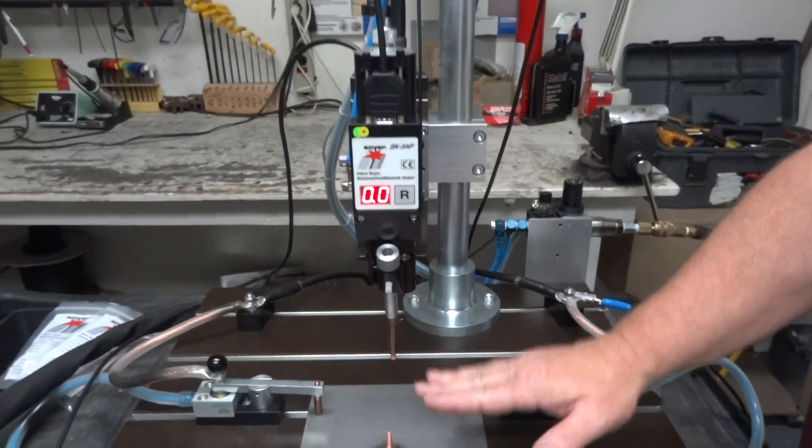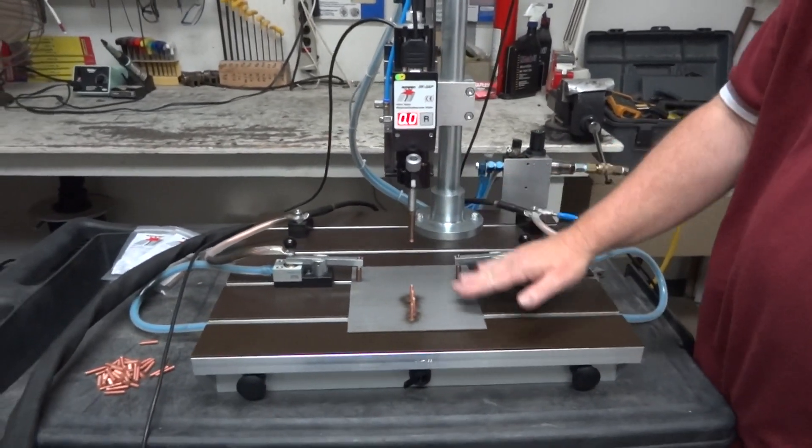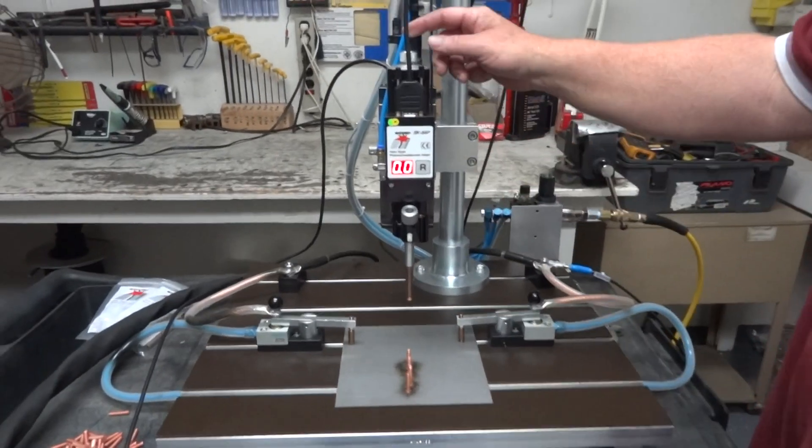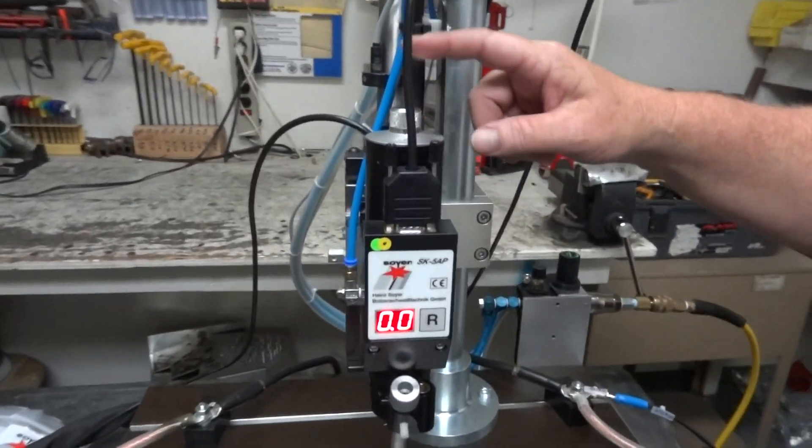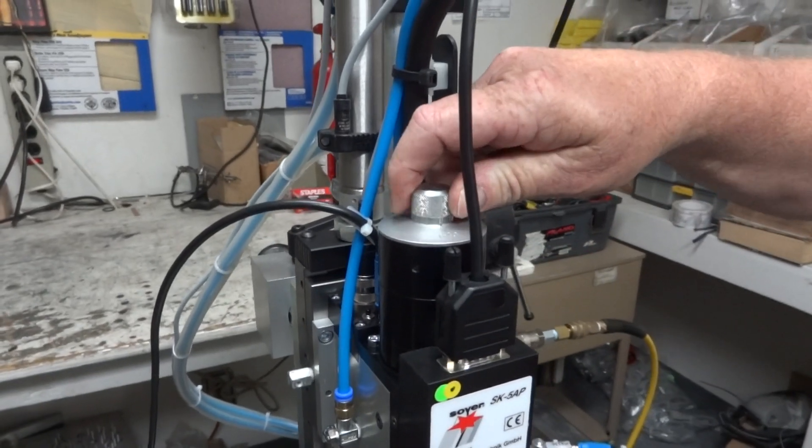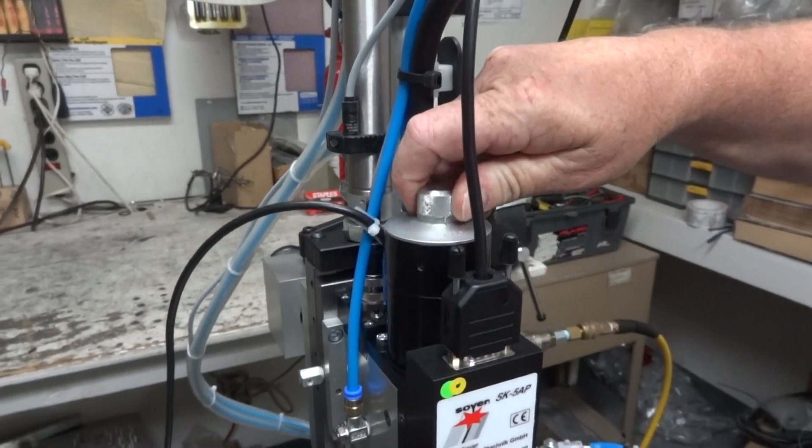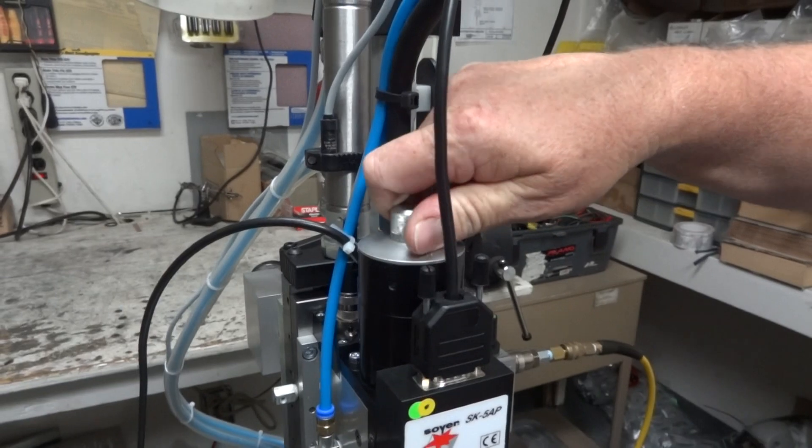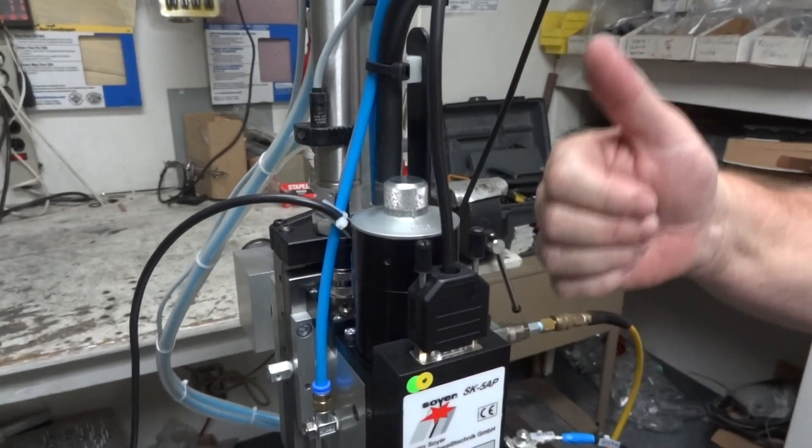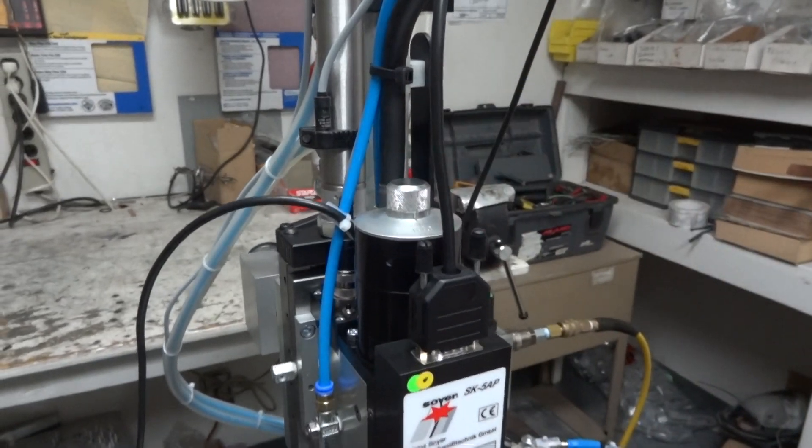The other adjustment we have to make is the height of the lift, and that's the number you're seeing right there. To adjust that, there's just a little dial on the front of the top of the weld head. Each click on it is a tenth of a millimeter. If we turn it clockwise, it decreases the amount of lift. If we turn it counterclockwise, it increases it.